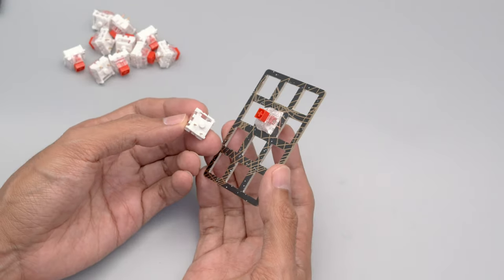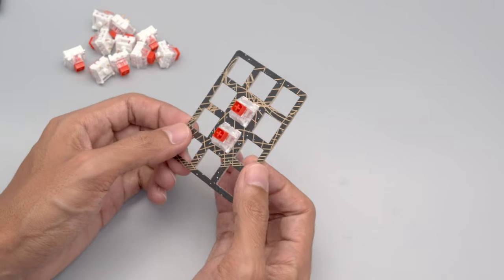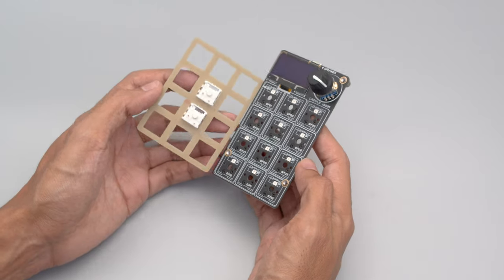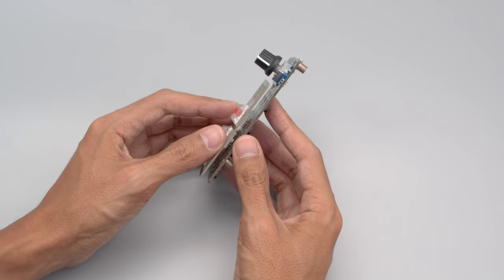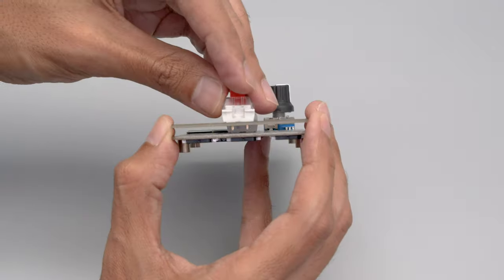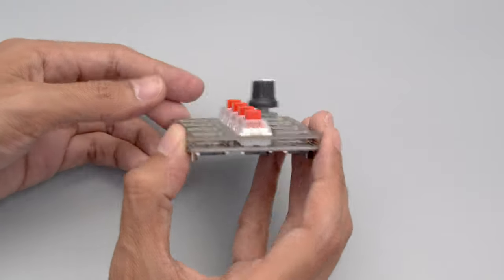To assemble your MacroPad, start by adding a few switches to the keyplate. Then, line up the pins with the sockets and carefully press them into place. Now you can proceed to install more switches, being very careful not to bend any of the pins.